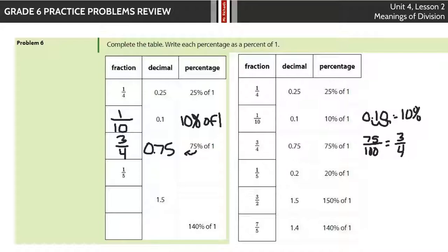1 fifth. Well, 1 fifth is the decimal, 2 tenths. A couple different ways to get there. You could divide. You could recognize that 1 fifth is equivalent to 2 tenths. And that's also equivalent to 20 over 100 if you multiply by 10 on top and bottom, which would get you 20% of 1.